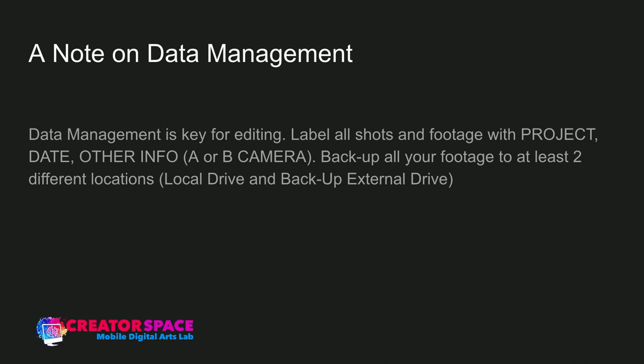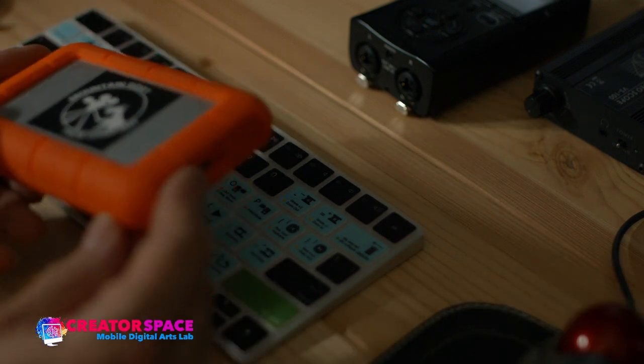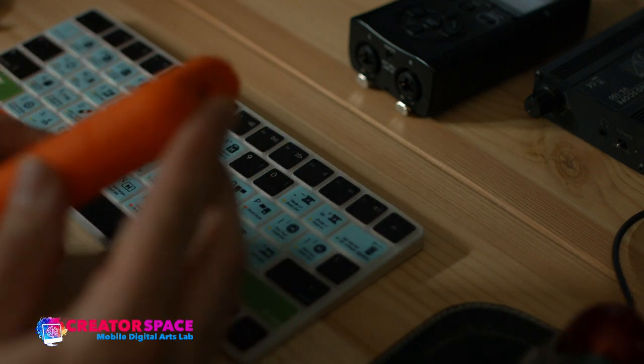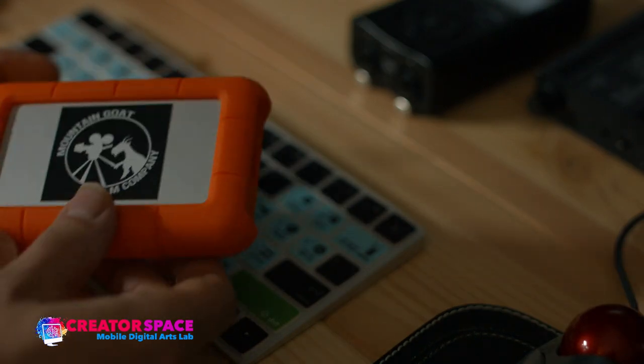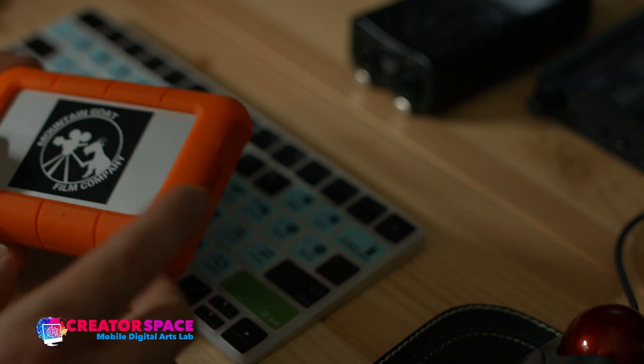You want to back up all your footage to at least two different locations — usually copying to your local drive where you're editing and then to some sort of backup or external drive. I like to have a rugged drive handy; this type can drop a couple of meters and won't break. Because digital media exists only as long as it exists — there's no tape, no negative — that raw footage needs to be protected. Data management is super key.